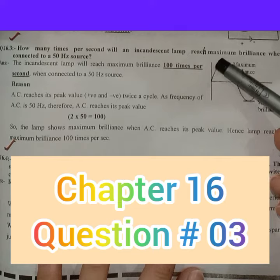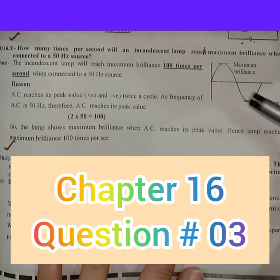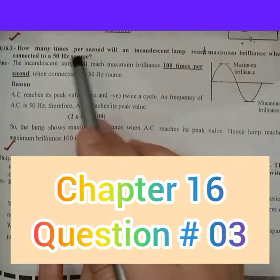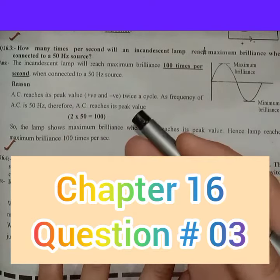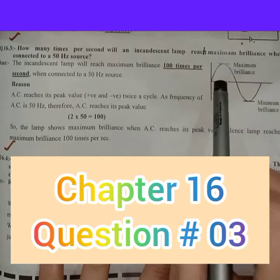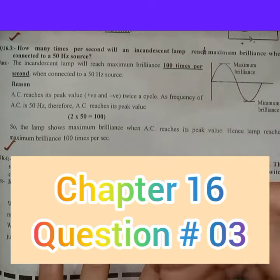If you have a wave, you can see the maximum brilliance. If you have a 50 Hz source, you will have 50 waves. In each wave, you can see maximum brilliance twice.